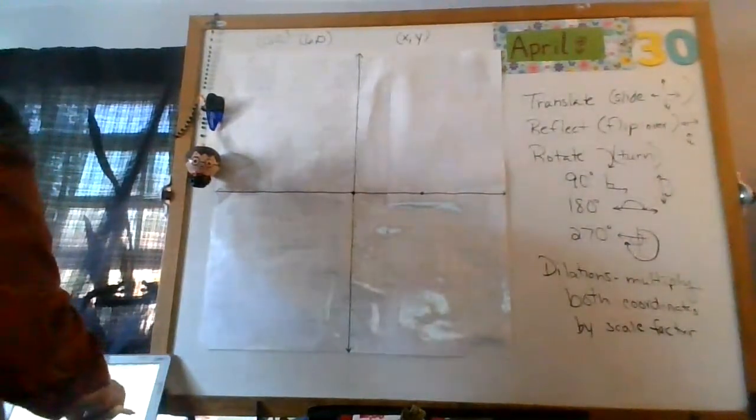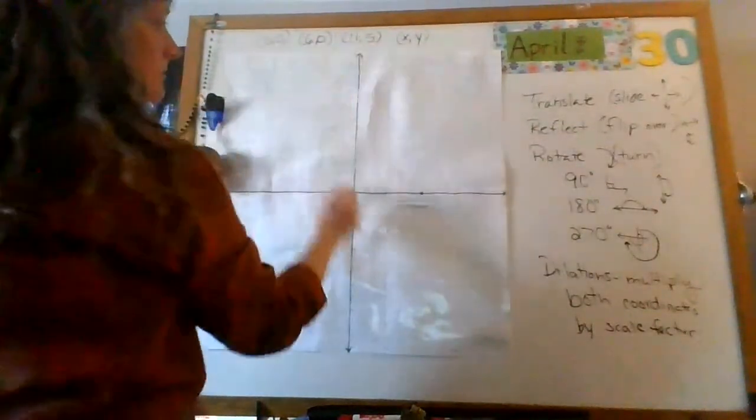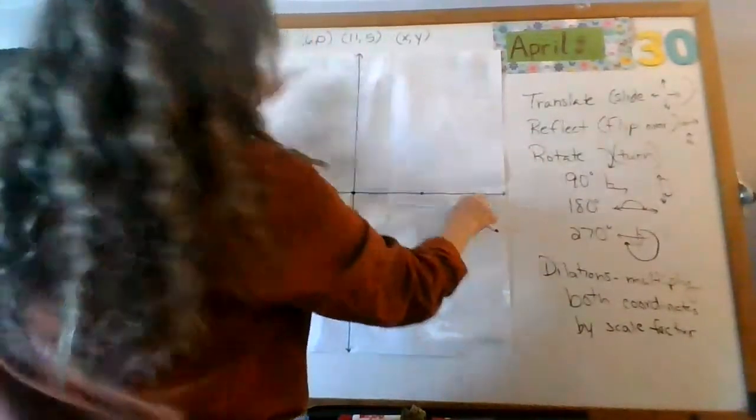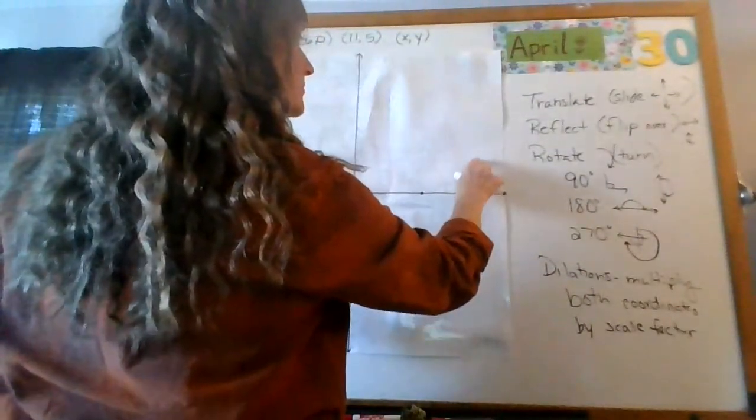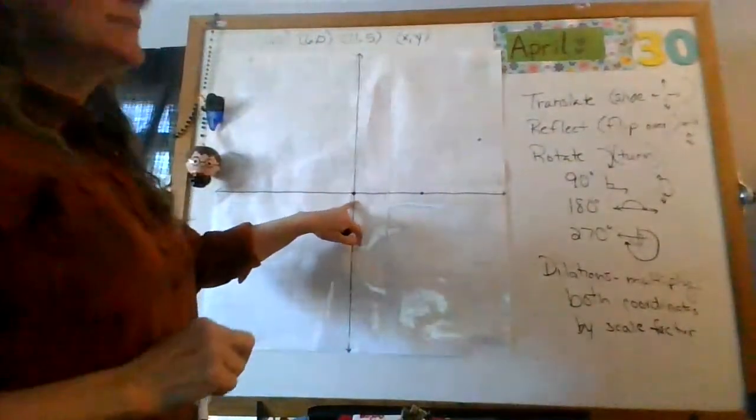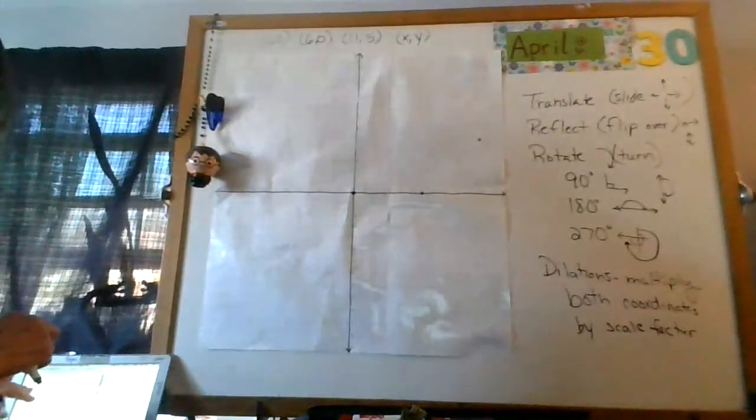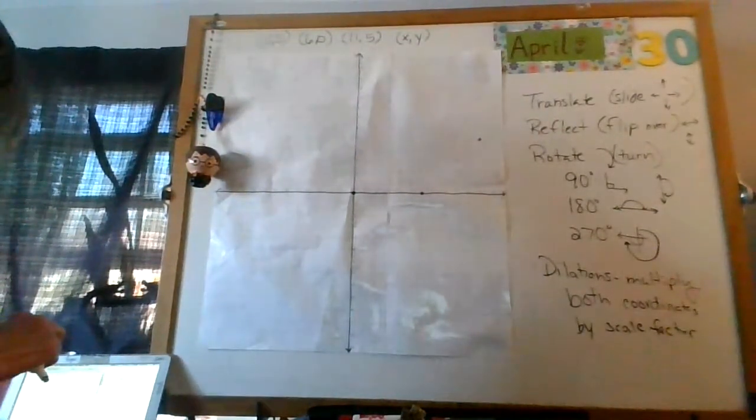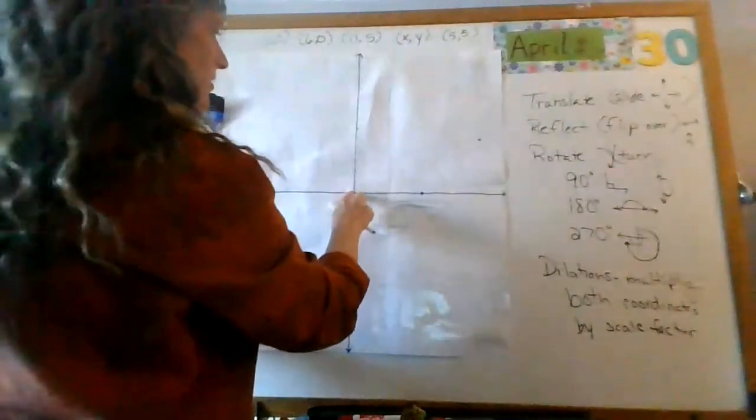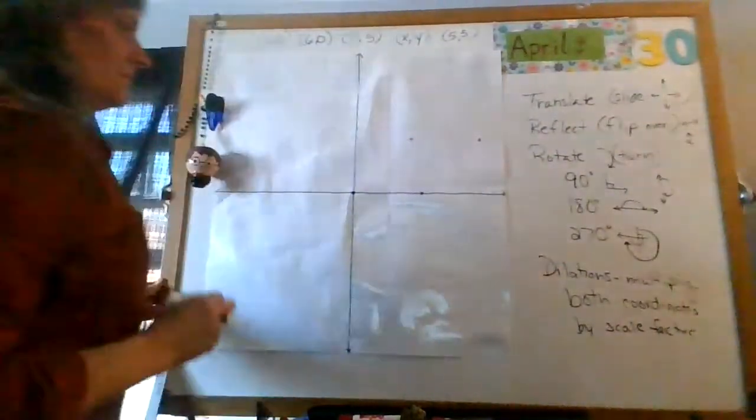The next point is 11, 5. X comes first. So, I go over 11. There's 11. And then, I go up positive 5. 1, 2, 3, 4, 5. Where do I start every time? 0, 0. I go over 11, up 5. And now, it says 5, 5. My last point is 5, 5. So, I go over 5, up 5.